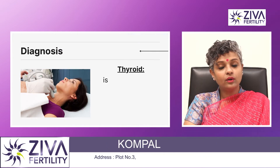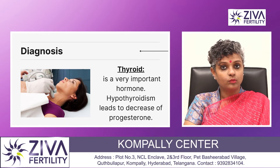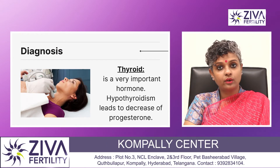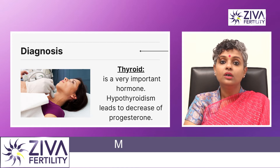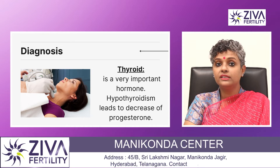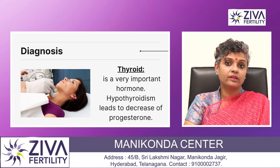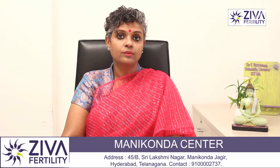TSH — thyroid is a very important hormone, and hypothyroidism leads to a downplay of progesterone. That is, progesterone release is reduced. Therefore, implantation rate is also reduced.